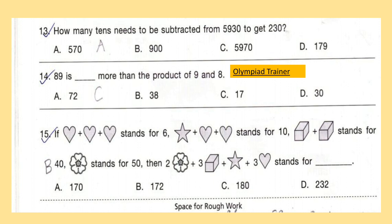Question 13: How many tens need to be subtracted from 5930 to get 230? Question 14: 89 is dash more than the product of 9 and 8.